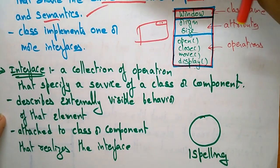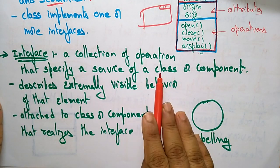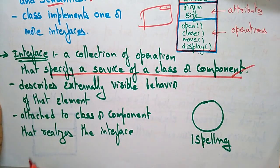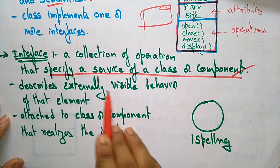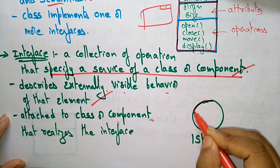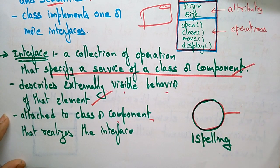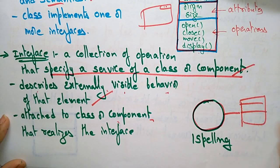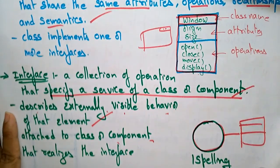Now let us come to the second structural thing, that is an interface. An interface is a collection of operations that specify a service of a class or a component — just specifying the service of a class or component. It describes the externally visible behavior of that element. It is represented as a circle shape attached to the class or component it serves.